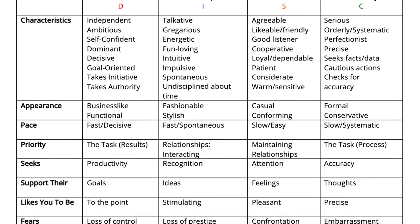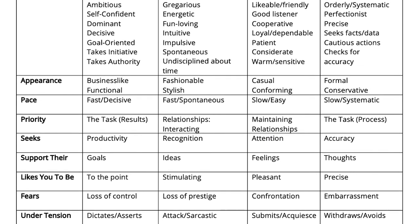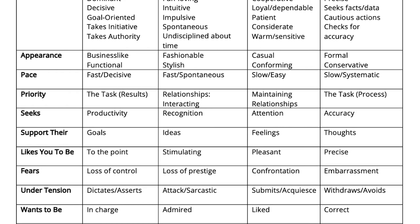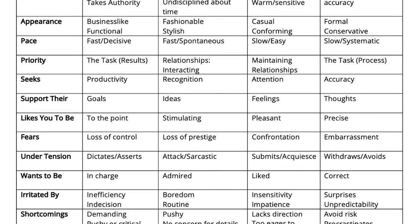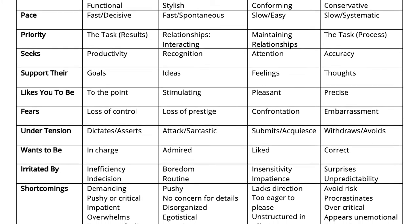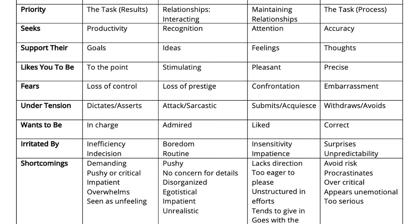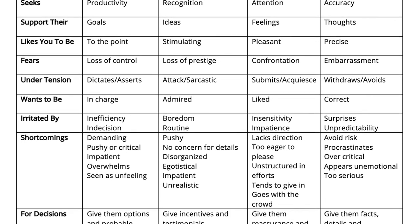The last document we have for you is one of my favorites — the behavioral style matrix. Get it in the overview and downloads if you haven't already. It puts everything we've discussed — director, promoter, supporter, analyzer, or the DISC — all together in a cheat sheet you can carry around. It covers characteristics, pace, priorities, decisions, and more. That consolidates everything from this and previous lessons. Join me in the next lesson, where we'll get into the basics of NLP.